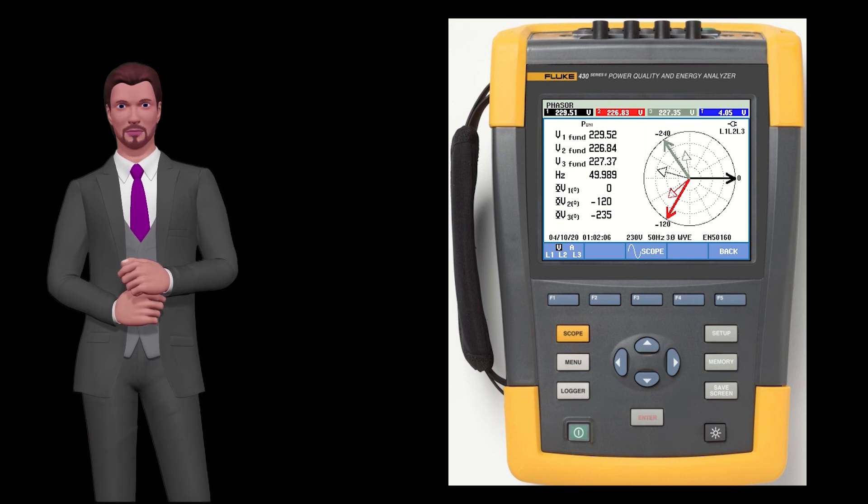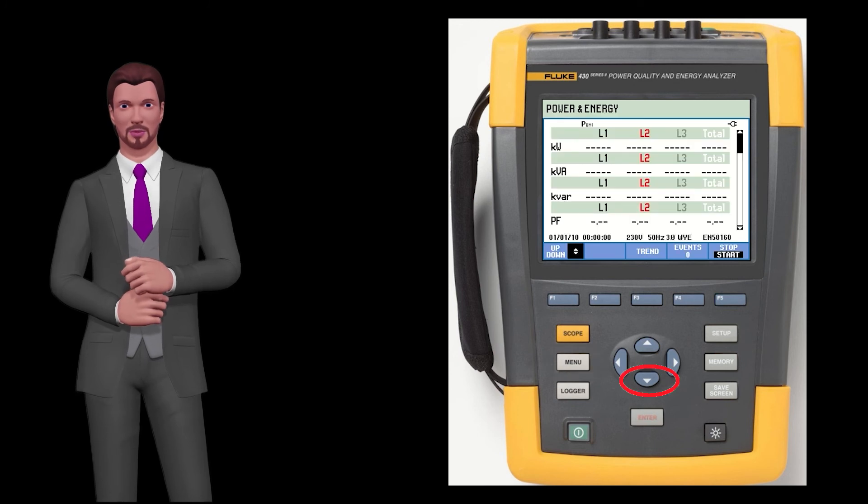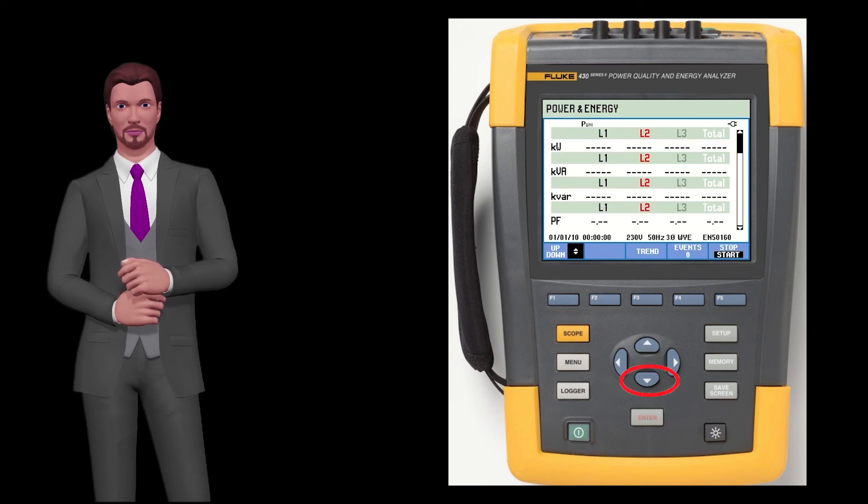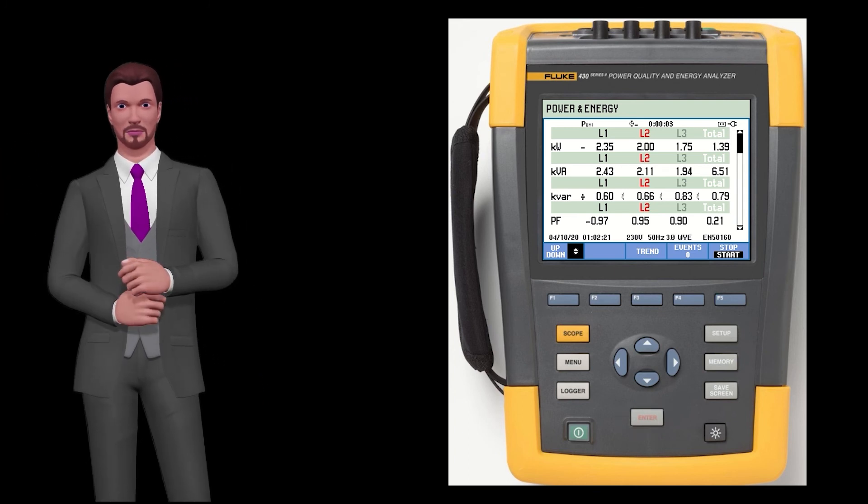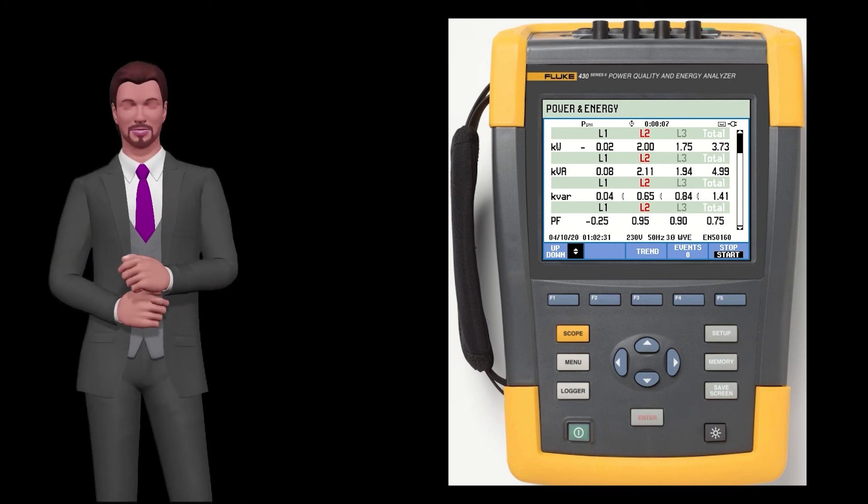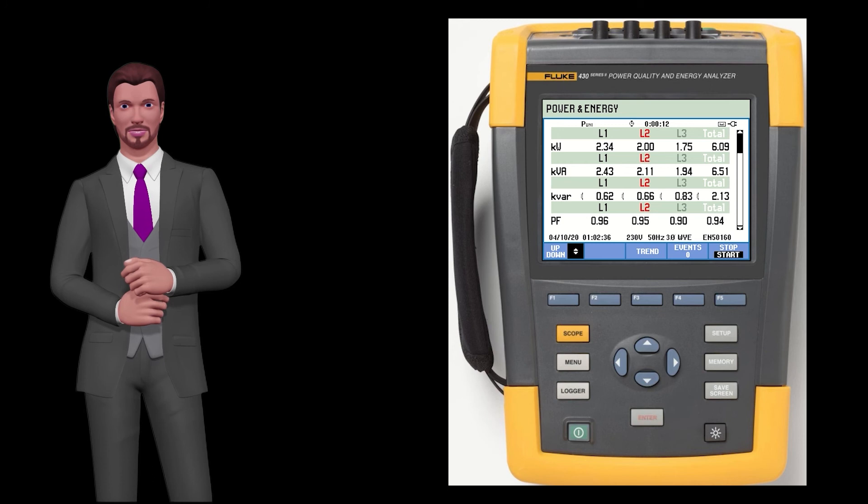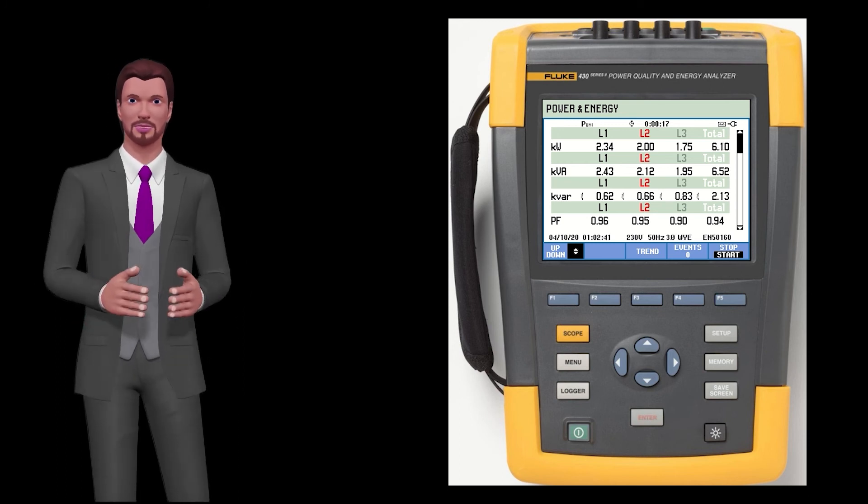But before putting it back on correctly, we are going to go to the power menu. For this, we press the menu key and with the down arrow we select power and energy and press enter. As we can see in the first line, the active power of phase 1 appears negative, while in phases 2 and 3 the active powers are positive. If we place now the probe of phase 1 correctly, that is, with its silk screened arrow pointing to the loads, we will see that the active power of phase 1 becomes positive.